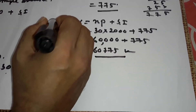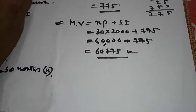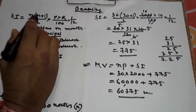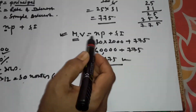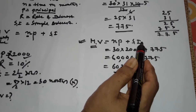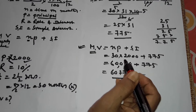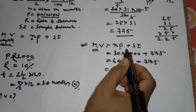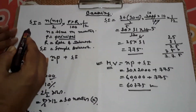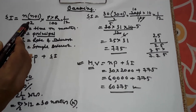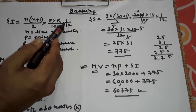From this equation you can find principal, rate, and time when the maturity value, n, and SI are given. If any one value is unknown and all others are given, you can find the unknown. To repeat: SI = n(n+1)/2 × P × r/100 × 1/12.